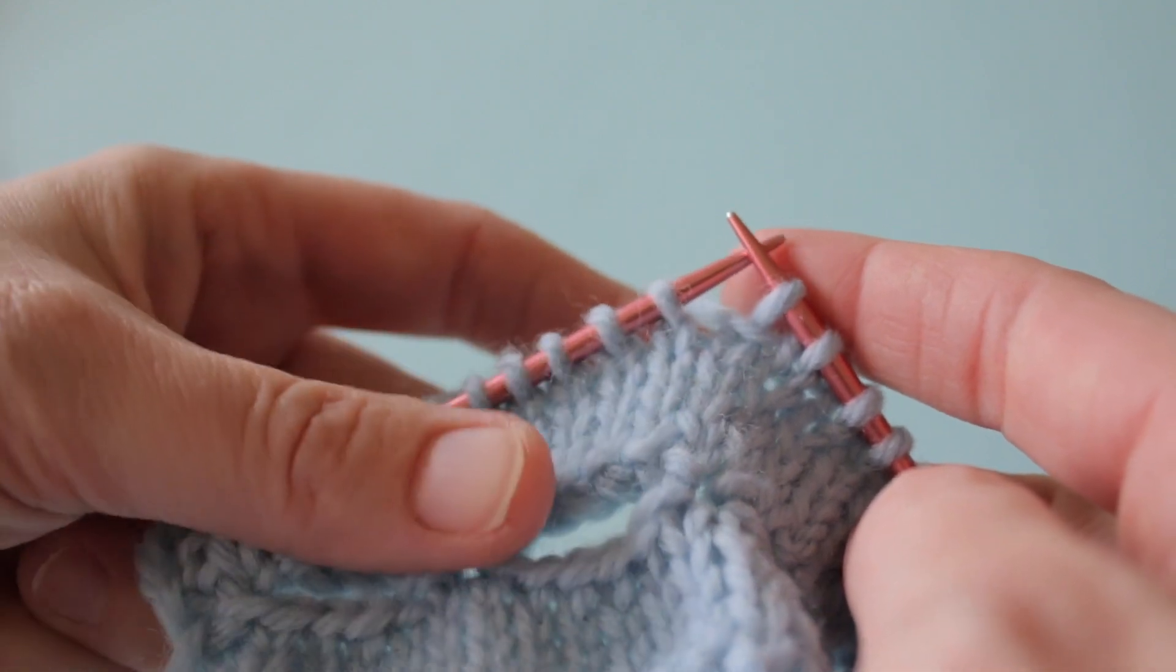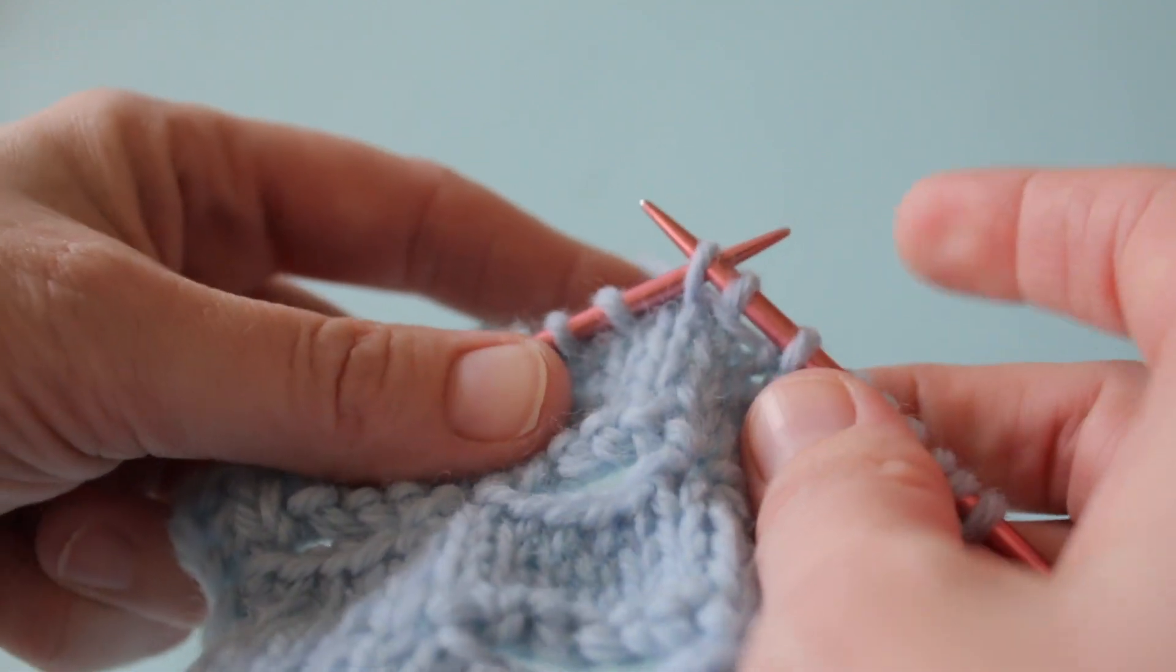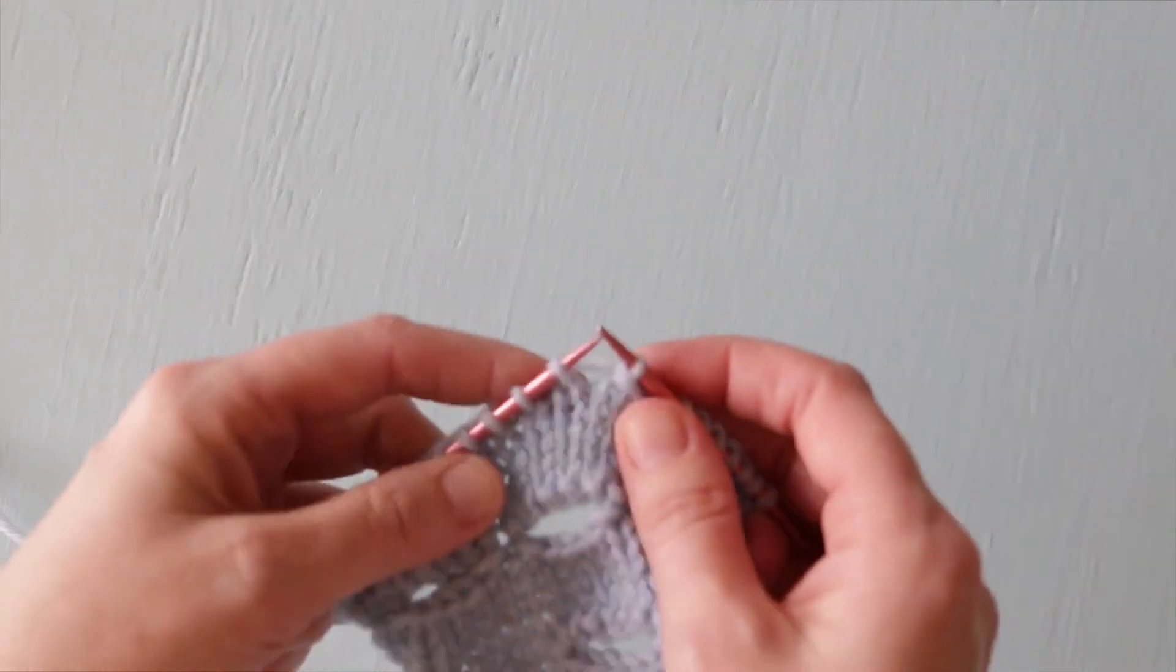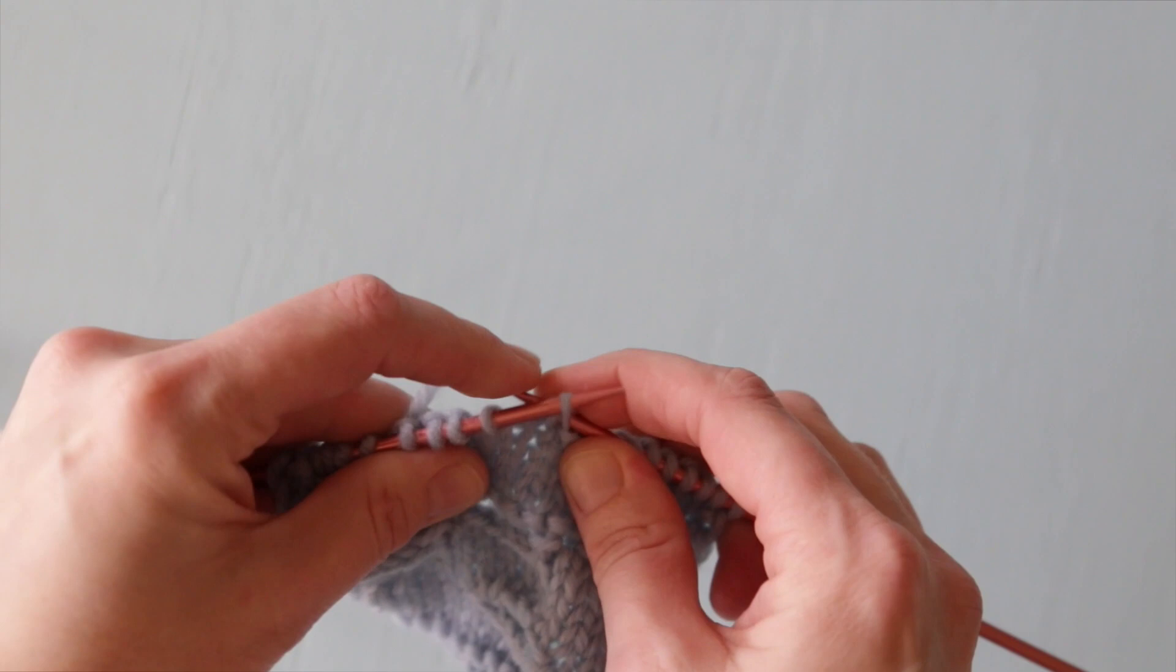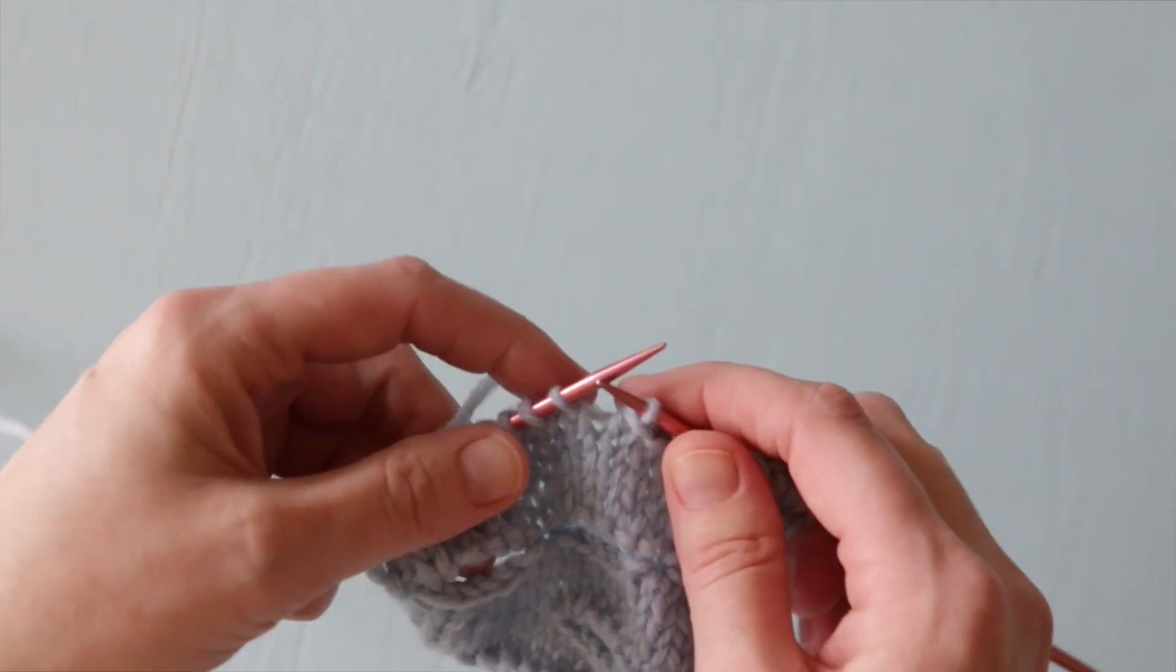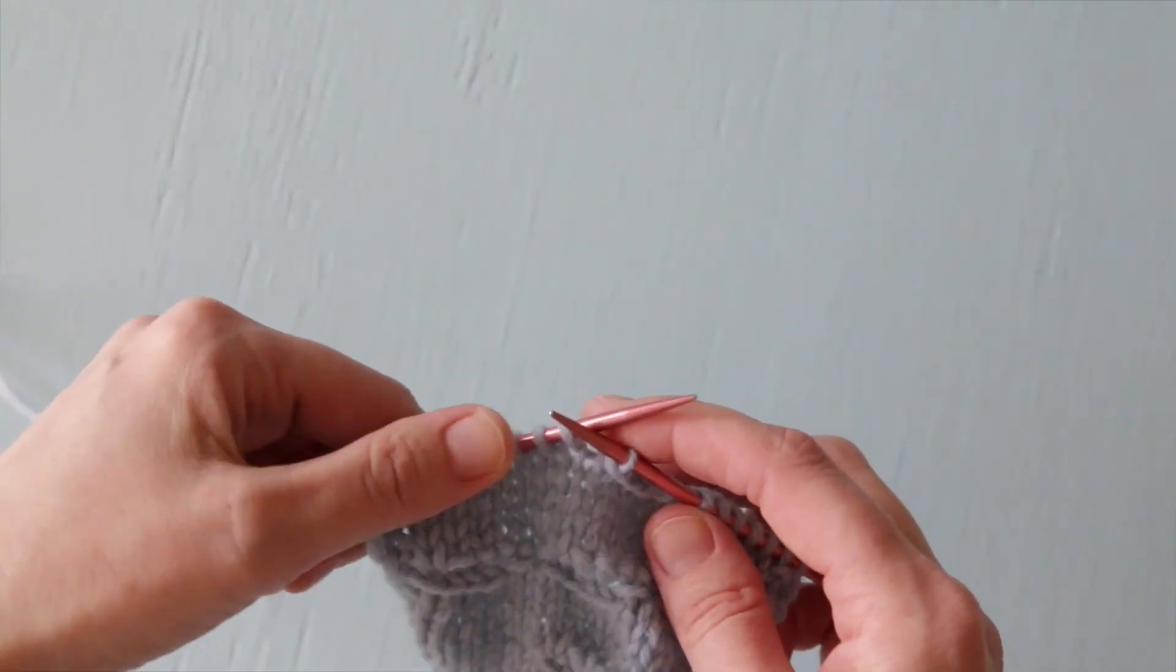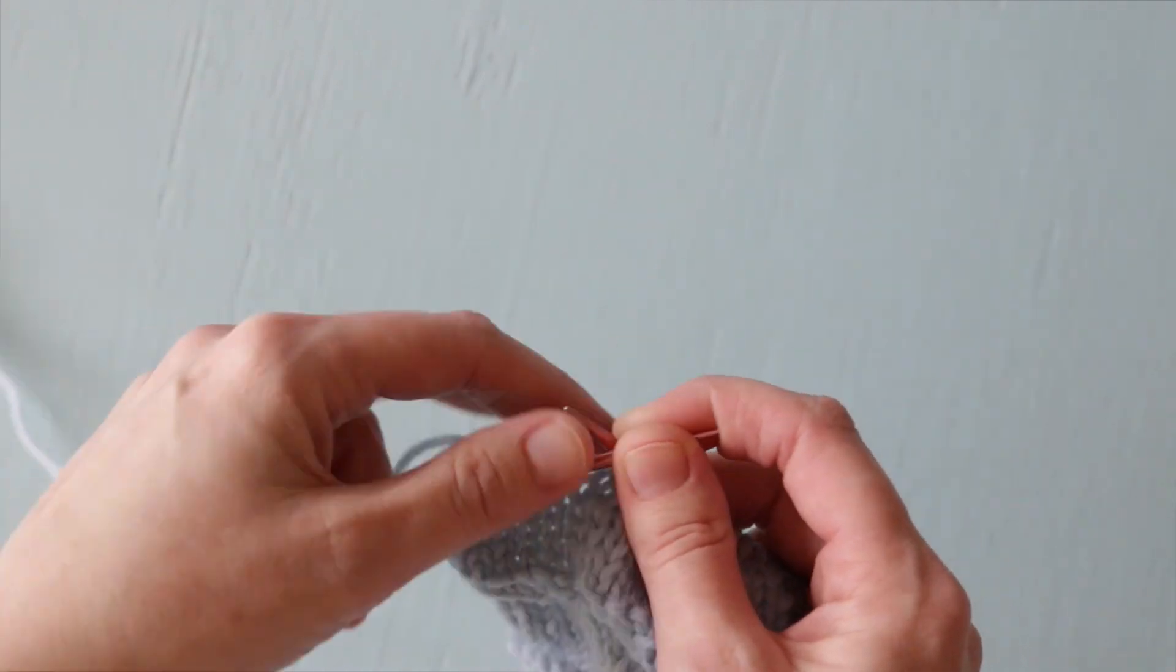Now we're going to slip the next stitch from our left needle to our right before passing the second stitch over it on the right needle, binding off one stitch. Now we're going to slip a stitch and pass the previous stitch over to bind off another. We're going to keep binding off in this manner until we have worked the correct amount of buttonhole stitches that our pattern calls for. I'm counting my stitches here to confirm I have bound off the number of stitches needed for this one-row buttonhole.